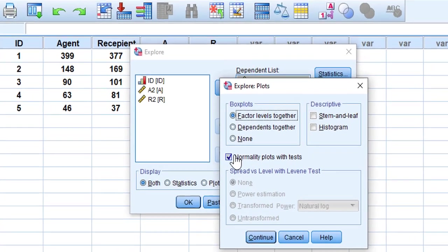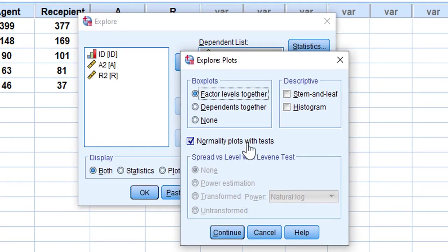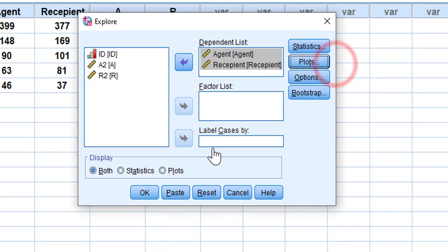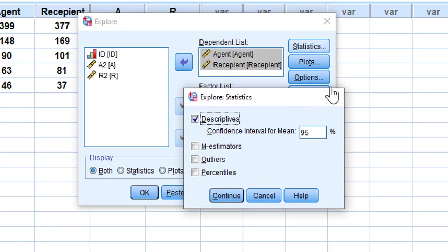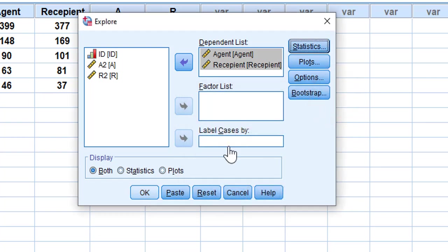In Plots, I'm going to tick Normality Plots with Tests. Sometimes you have this, you just have to check them. Then I'm going to click for Statistics. So I already have the right information. I have confidence level at 0.05.